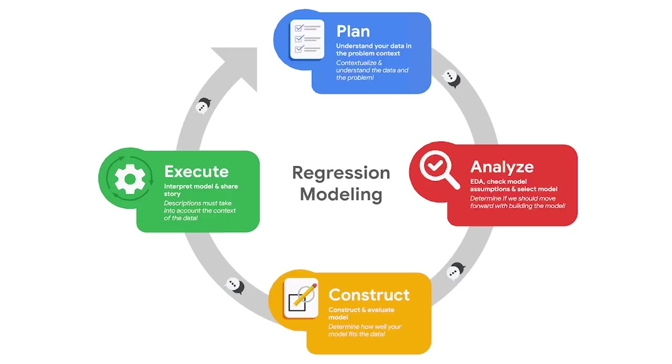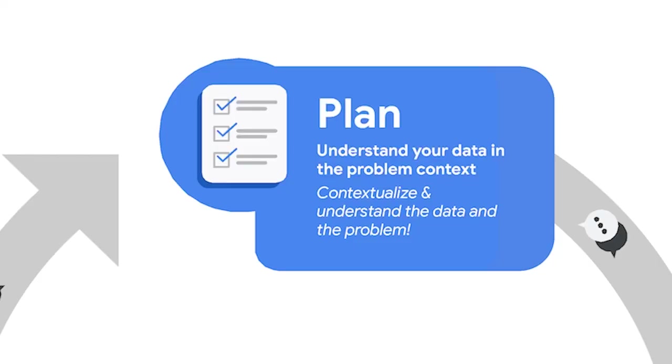In this course, we will cover each step of the modeling process using PACE. Let's take some time to preview how PACE works in the context of regression analysis. In regression modeling, the plan stage is about understanding your data in the problem context. Knowledge you bring, whether from industry or others, can be instrumental in the plan stage. By considering what data you have access to, how the data was collected, and what the business needs are, you'll be able to strategically analyze, construct, and execute the rest of your work. The plan stage will guide the other three stages of PACE.